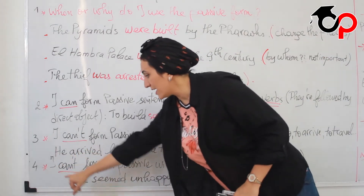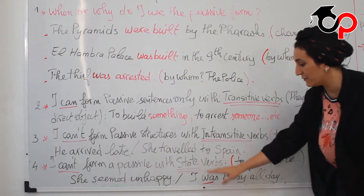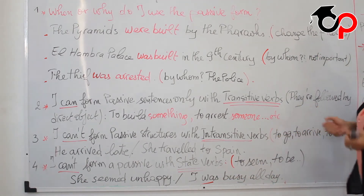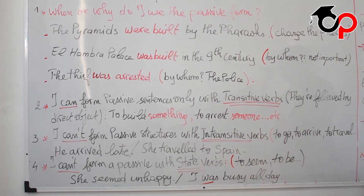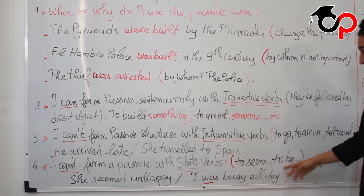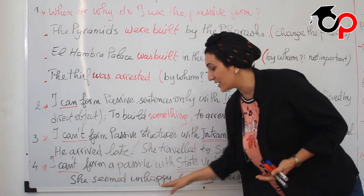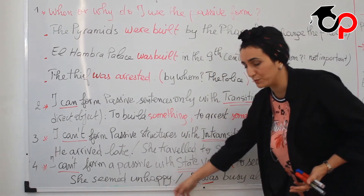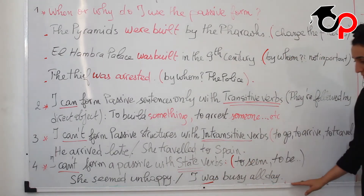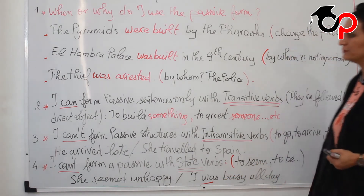The fourth point: I cannot form a passive with state verbs. State verbs describe a state or situation — like 'to seem,' 'to be.' Examples: 'She seemed unhappy' — this sentence cannot be turned to passive voice. 'I was busy all day' — here is the verb 'to be' in the past. These cannot be made passive.